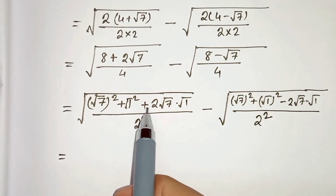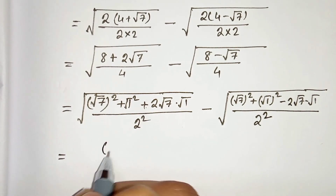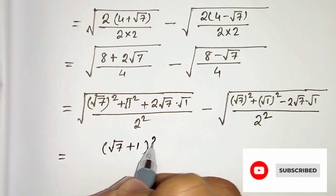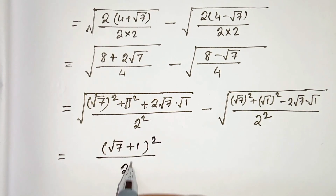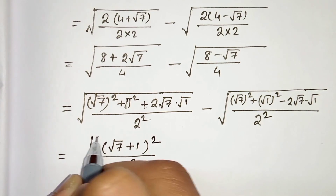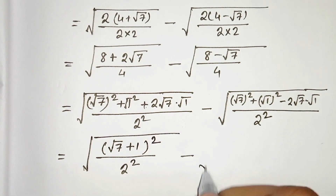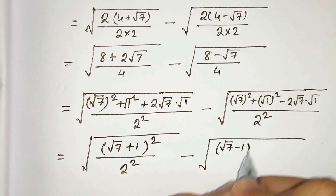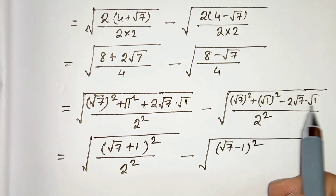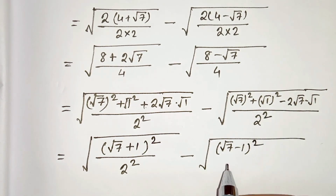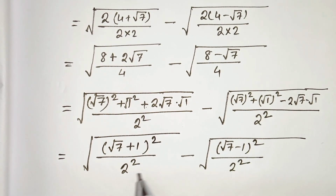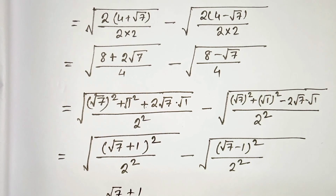From this we can write it as a squared plus b squared plus 2ab, so we can write (root 7 plus 1) whole squared over 2 squared. And from the second term we can write (root 7 minus 1) whole squared over 2 squared, which is the a squared plus b squared minus 2ab equals (a minus b) whole squared identity. The square root and the square cancel, so we get (root 7 plus 1) over 2 minus (root 7 minus 1) over 2.